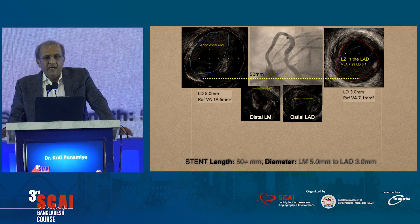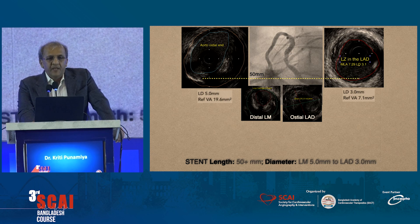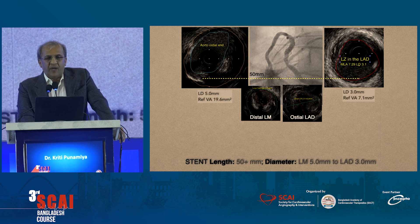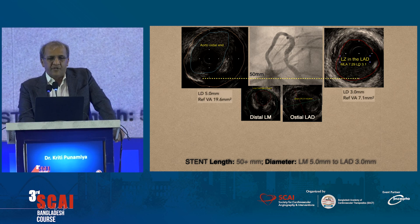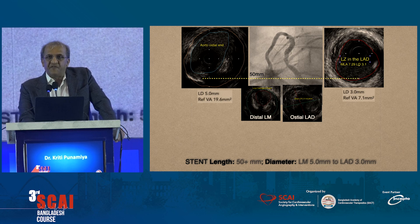Let's go to a case. This is a left main — it's a distal left main. It looks like the circumflex might be involved. The lesion extends into the LAD much beyond. When I look at the landing zone in the LAD, it represents a luminal diameter of 3 to 3.1, which puts your MSA target distally at 7.3. Proximally, the disease extends to the ostium of the left main, so you have to stretch your stent all the way to the ostium. This is the largest segment, and in between it's all soft plaque, which is good.